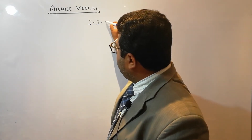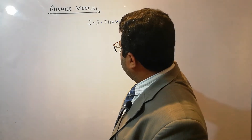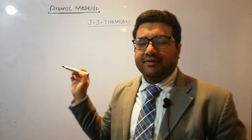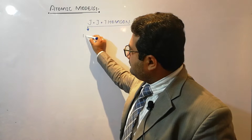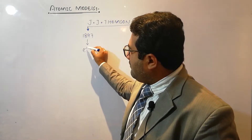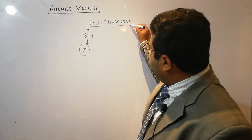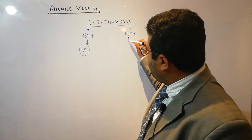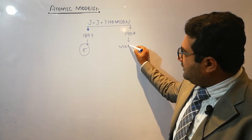We know the name of scientist J.J. Thompson. In 1897, he discovered the electron, and seven years later — in 1904 — he presented the first model of the atom.